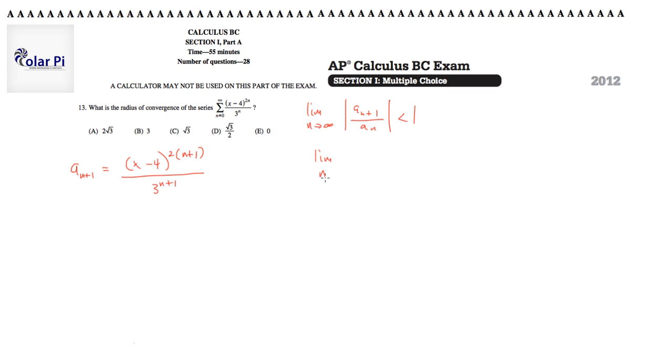And so you write limit as n goes to infinity, and then it's going to say a sub n plus 1 is going to be x minus 4 to the, note this by the distributive property is going to say 2n plus 2 divided by 3 to the n plus 1,